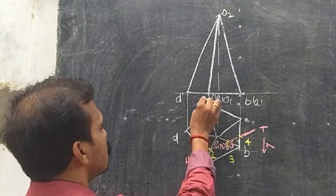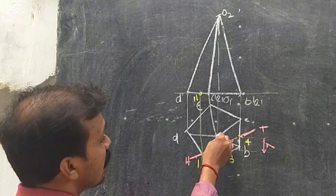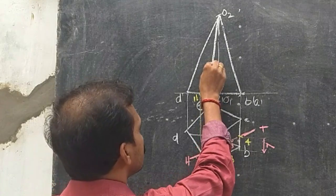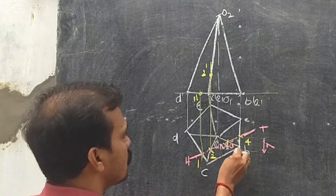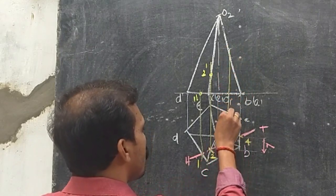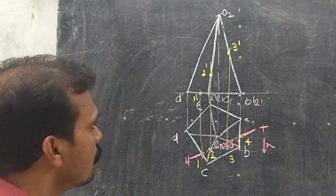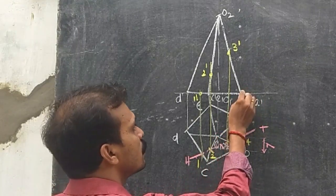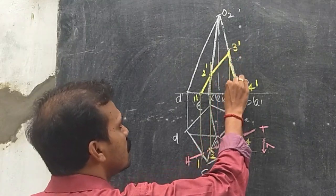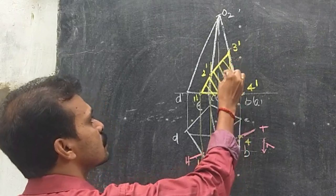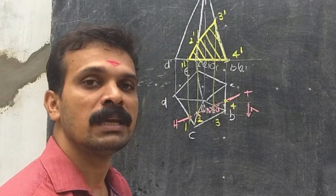Now transfer these points to the front view. Point 1 is on the base edge CD — transfer it to get point 1 dash. Point 2 is on the lateral edge OC — transfer it to get 2 dash. Point 3 is on edge OB — transfer it to get 3 dash. Point 4 is on the base edge AB, and since the front view of AB is just a point, 4 dash coincides with that point. Connecting these gives the front view of the section.